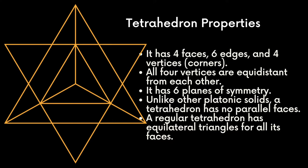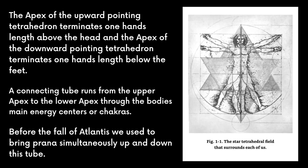What we know about the star tetrahedron is that it deflects energy and protects you as it spins around you, due to these properties. The star tetrahedron is a field that surrounds each of us. The apex of the upward pointing tetrahedron terminates one hand's length above our head, and the apex of the downward pointing tetrahedron terminates one hand's length below our feet.